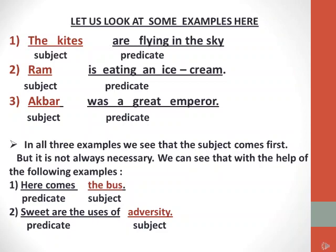Number 2: 'Ram is eating an ice cream.' First we ask who — Ram. So Ram becomes the subject. Keeping in mind that -ing form indicates a verb, 'eating' is the verb. So 'is eating an ice cream' becomes the predicate. Ram also plays the role of a noun.